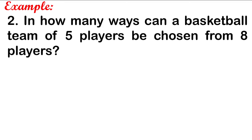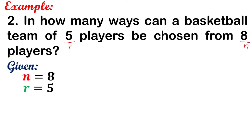Problem: In how many ways can a basketball team of 5 players be chosen from 8 players? You have 8 players originally, so N is 8. You will choose 5 players because in an official basketball game, only 5 players are allowed to play at a time. So N is 8 and R is 5.